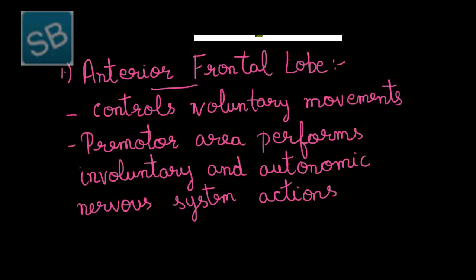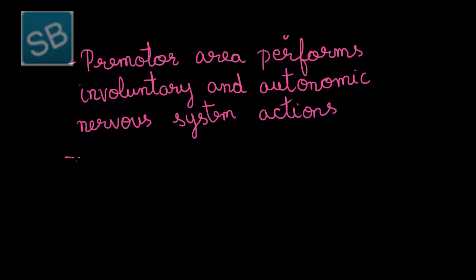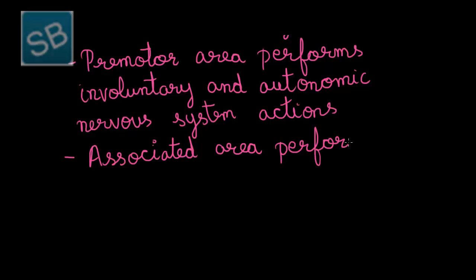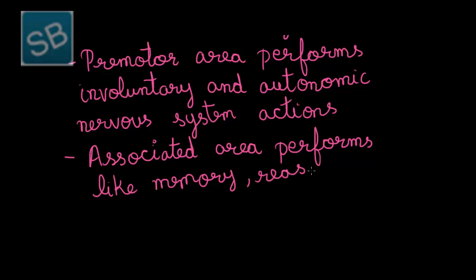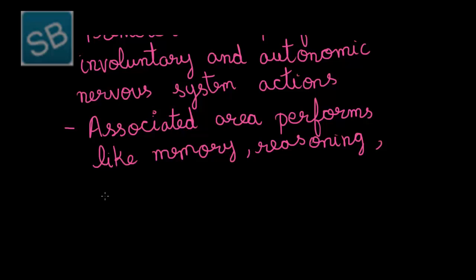The actions performed by the involuntary nervous system and autonomic nervous system are handled by the premotor area. The associated area of the frontal lobe performs different functions like memory and reasoning.